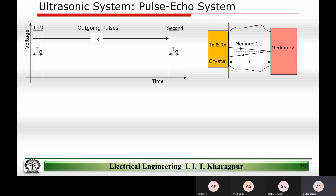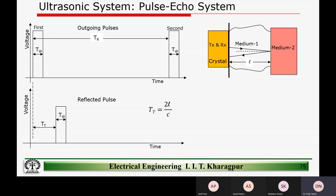Last class, we saw that in an ultrasound system we need to take care of timing. When we are sending the waves, the waves will be reflected back. Based on the time difference between the transmitted and the reflected wave, we can calculate the distance between the transmitter and the medium — how far the medium is. Based on these waveforms, last class we discussed what are the key critical constraints we need to take when transmitting.